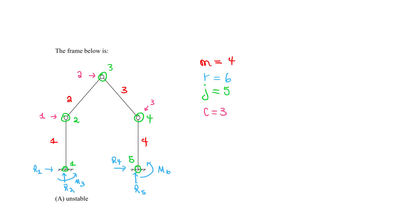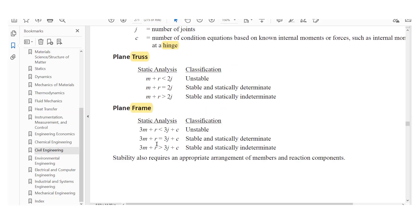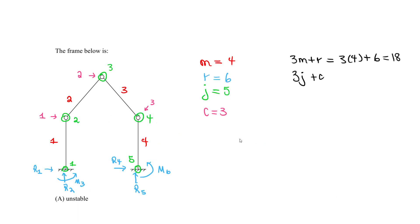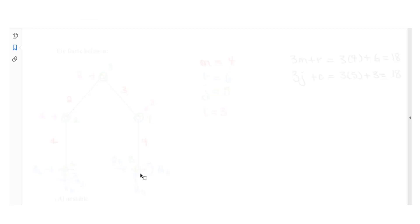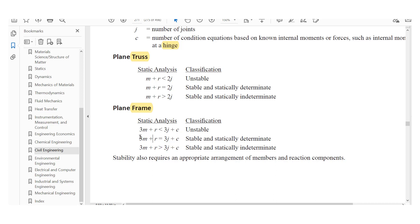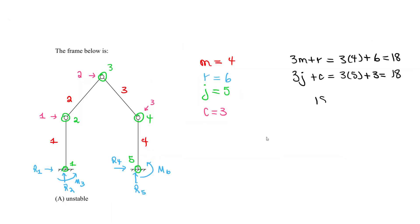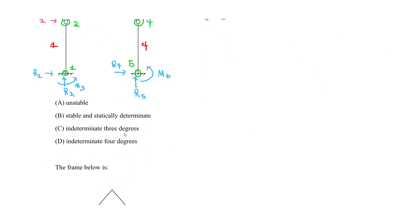So now we just do 3M plus R. We do 3M plus R, which equals to three times four plus six, and that equals to 18. Then we do the 3J plus the C value, as shown here, 3J plus C. So 3J plus C equals to three times five plus three, and for that, you should also get 18. So now we compare the left side and the right side. It's obviously the second case because 18 equals 18. So it's going to be stable and statically determinate. So our correct answer should be B.